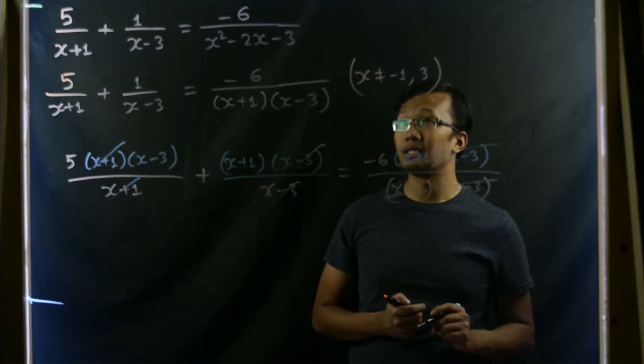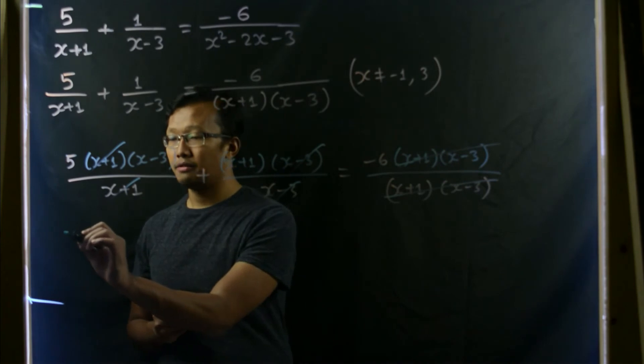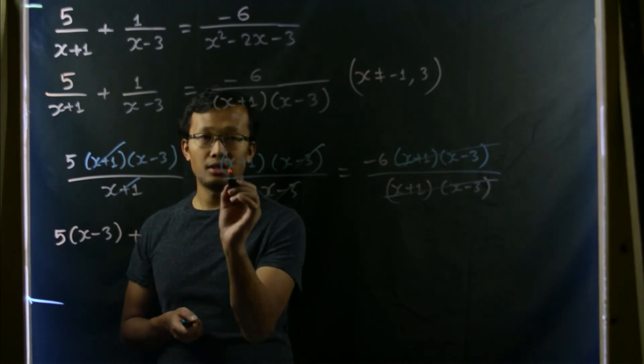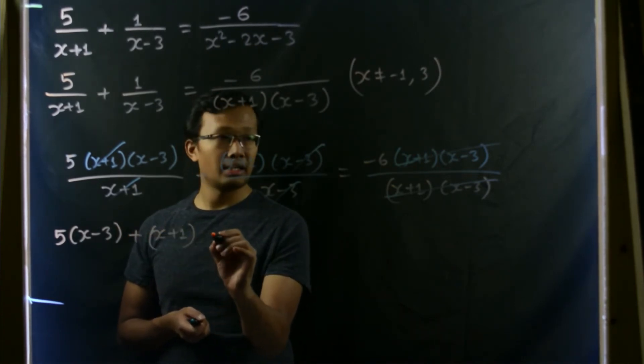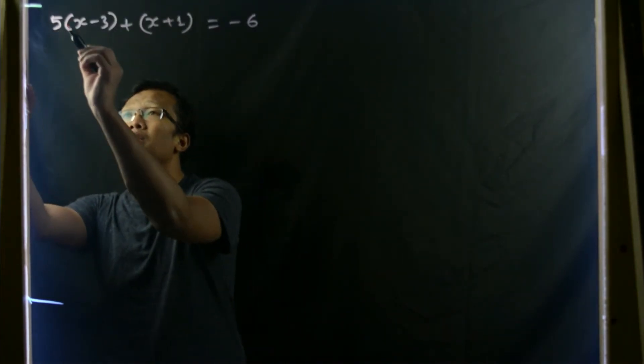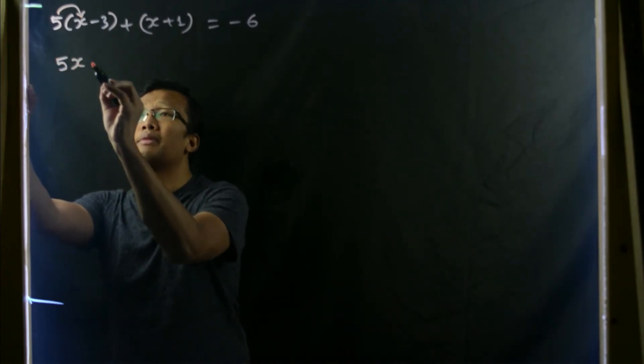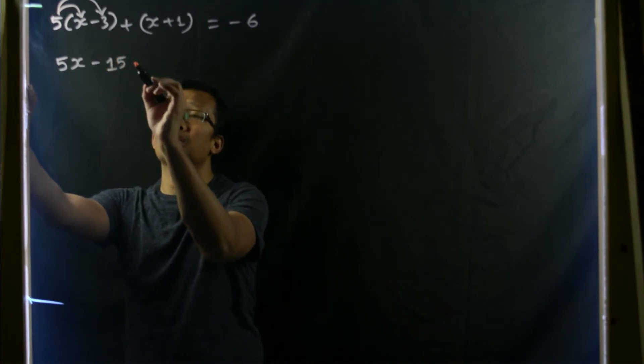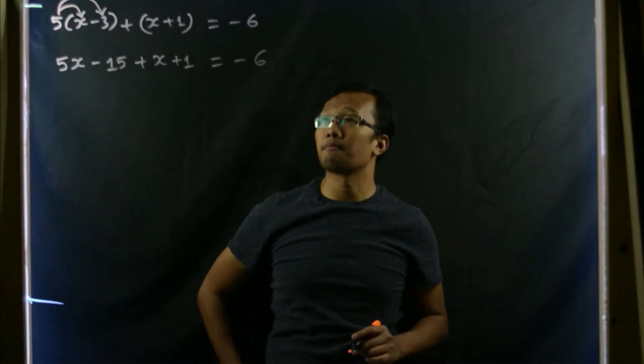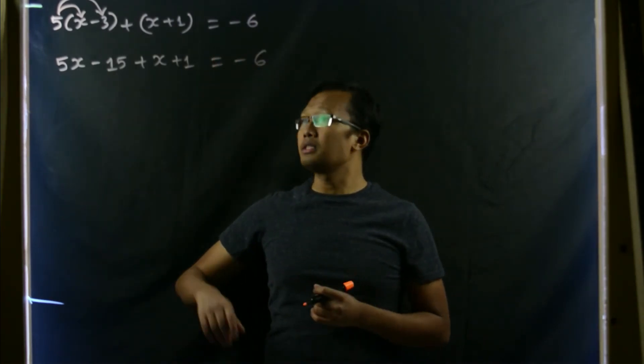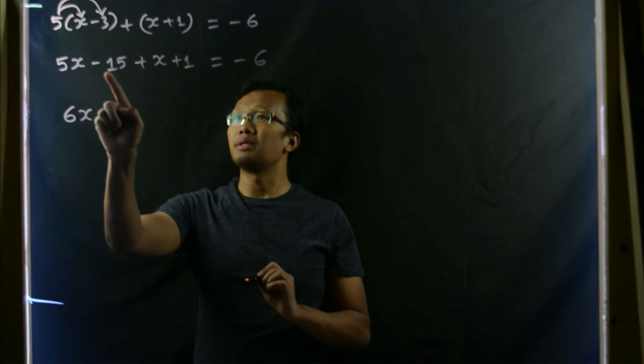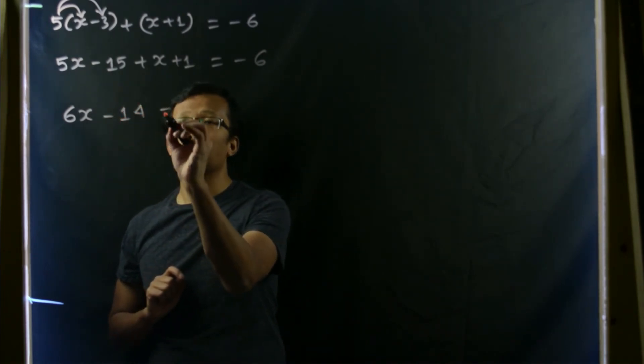So our remaining equation would be 5 times (x-3) plus (x+1) equals -6. So 5 should be multiplied with both x and -3. That would be 5x minus 15, plus x and 1. So this would be simply x+1 equals -6. And after this, let us combine the like terms, 5x and x, that makes it 6x. -15 plus 1, that's -14, equals -6.